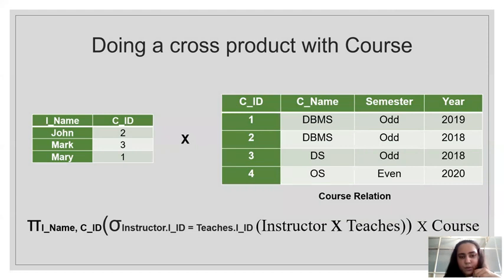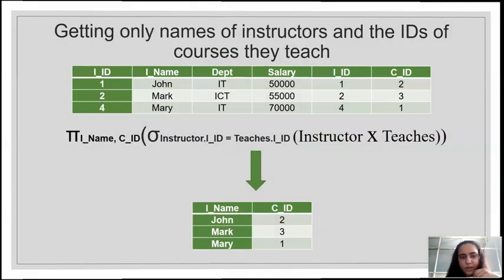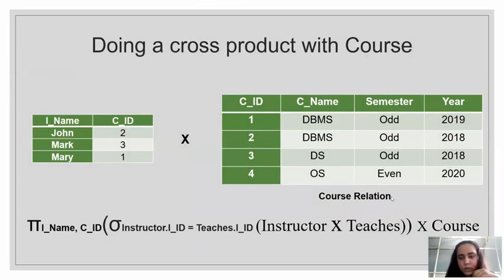To get the course names, we need to do a cross product with the course table, because to get the name of the course we require the course relation. The relation we got from the last query gets multiplied with the course relation. The table from the previous query is then crossed with the course table. Again you will get twelve rows, and each time one row from the previous result will be combined with one row from course.